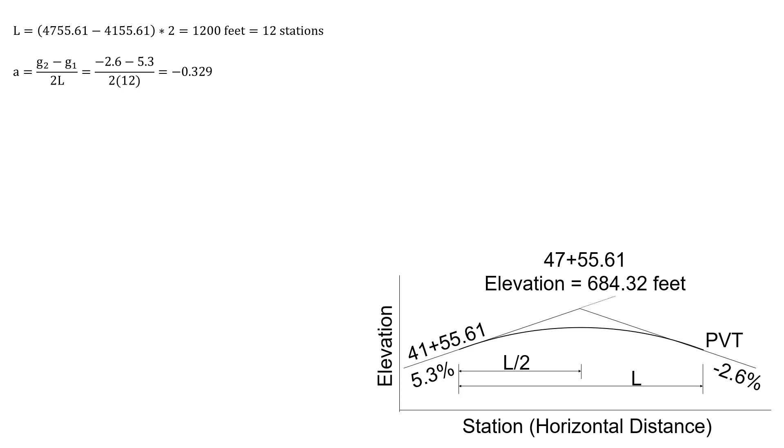A is G2 minus G1 over 2 times L. So we're going to plug in the values there and get an A of negative 0.329. B is just G1, so that's 5.3. And C is the elevation of the PVC. So we're going to start at our PVI elevation that was given as 684.32 feet. And then we're going to subtract off G1 times that distance. So 5.3 times 6 stations gives us a PVC elevation of 652.52 feet.